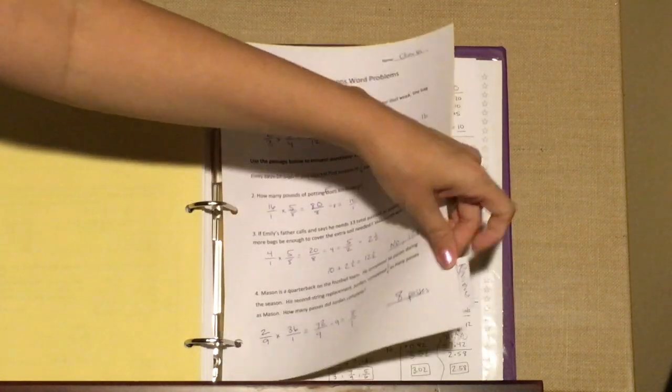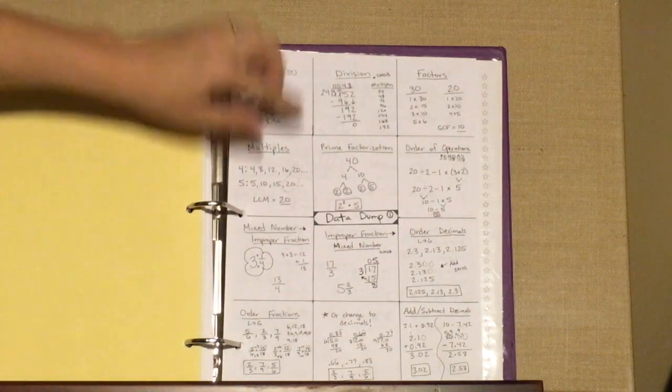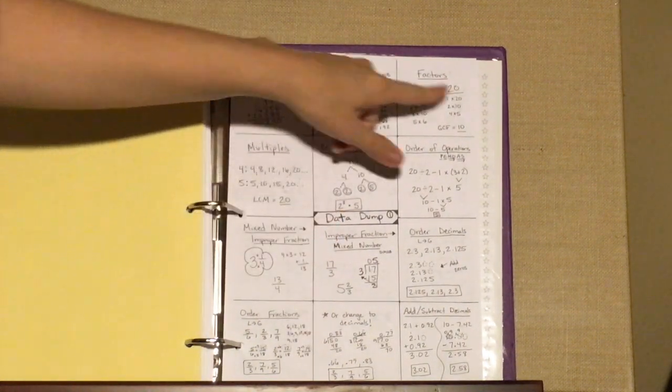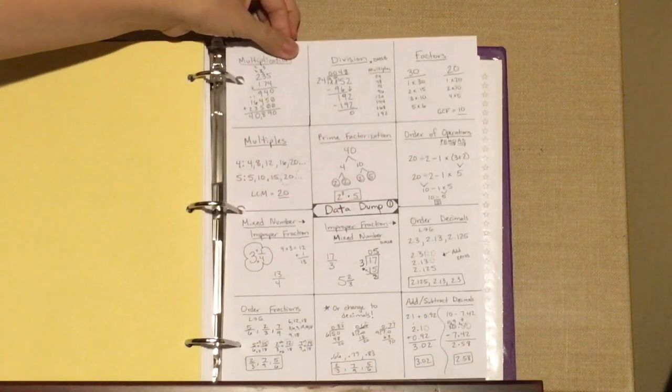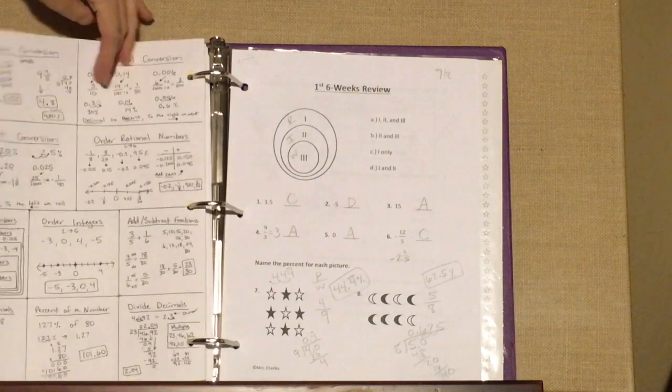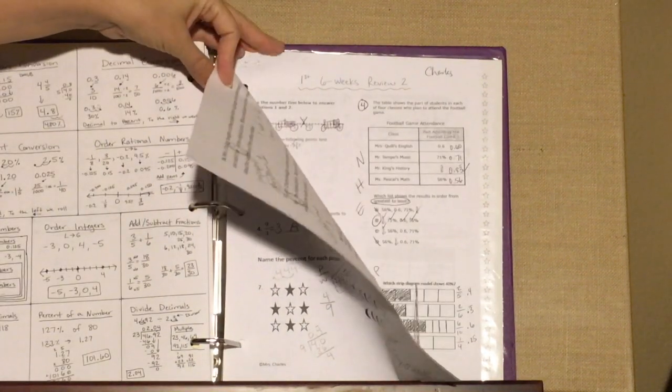And then the last section is review, and this is where they'll have things like their data dump, which basically summarizes all the skills they learn each six weeks. So this was the first six weeks data dump. They'll also have their six weeks reviews on here. So there were two reviews for the first six weeks.